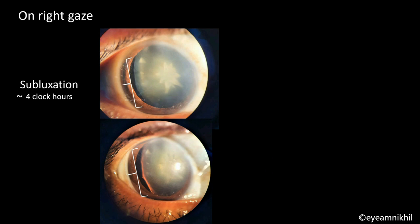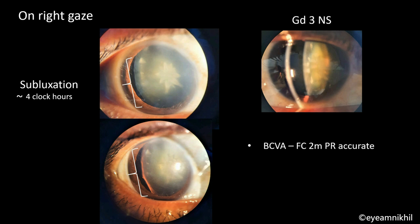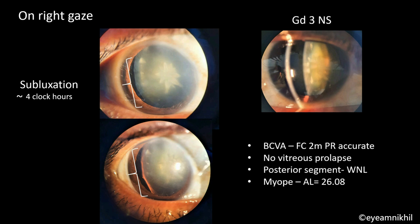The patient also had a grade 3 nucleus sclerosis. Best corrected visual acuity was finger count at 2 meters, PR accurate. There was no evidence of vitreous prolapse. Posterior segment appeared to be within normal limits. The patient was also a myope with axial length of around 26.08 mm.